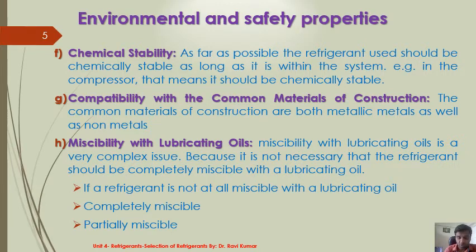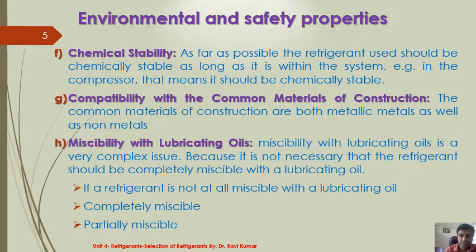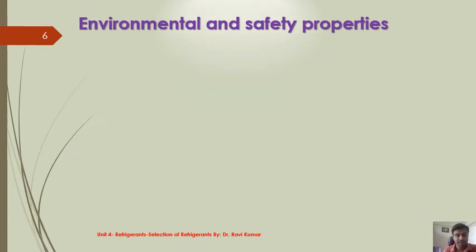The second case is when a refrigerant is completely miscible with lubricating oil — for example R-type refrigerants that are completely miscible. There is no problem in this case because the oil circulates along with the refrigerant, and if you take care in the design of the evaporator tubes the oil will come back to the compressor. The problem comes with partially miscible refrigerants such as R22, where you have to take extra care to make sure that the lubricating oil returns to the compressor and understand the relationship between the lubricating oil and the refrigerant.